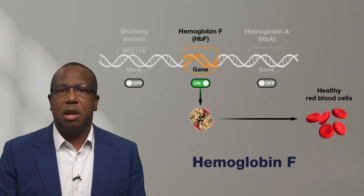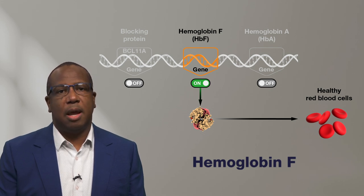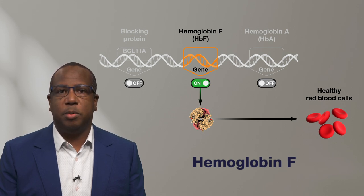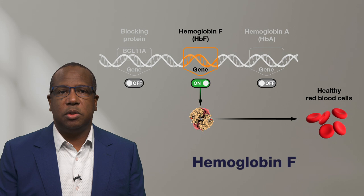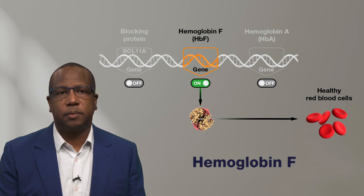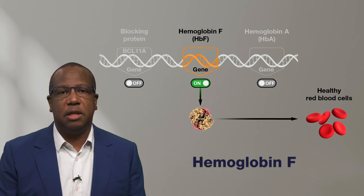Hemoglobin F is a non-sickling hemoglobin that is present in red blood cells before birth. After birth, a gene is turned on that blocks the production of hemoglobin F and the body will then produce hemoglobin A. For individuals with sickle cell disease, a small amount of hemoglobin F continues to be produced after birth. Hemoglobin F is also known as fetal hemoglobin or HBF.